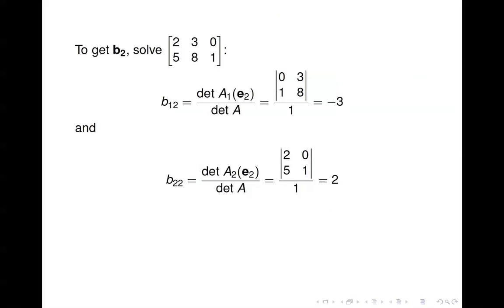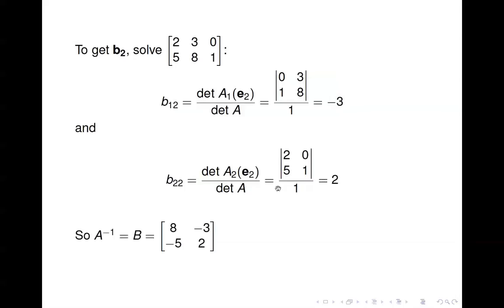To get b_2 we solve a similar system with right-hand side e_2 = [0, 1]. For the first entry, substitute [0,1] in the first column of A, compute the determinant: −3 divided by 1 gives −3. For the second entry, substitute the right-hand side in the second column of A, compute that determinant: 2 divided by det(A) gives 2. So A inverse is the matrix [8, −3; −5, 2].